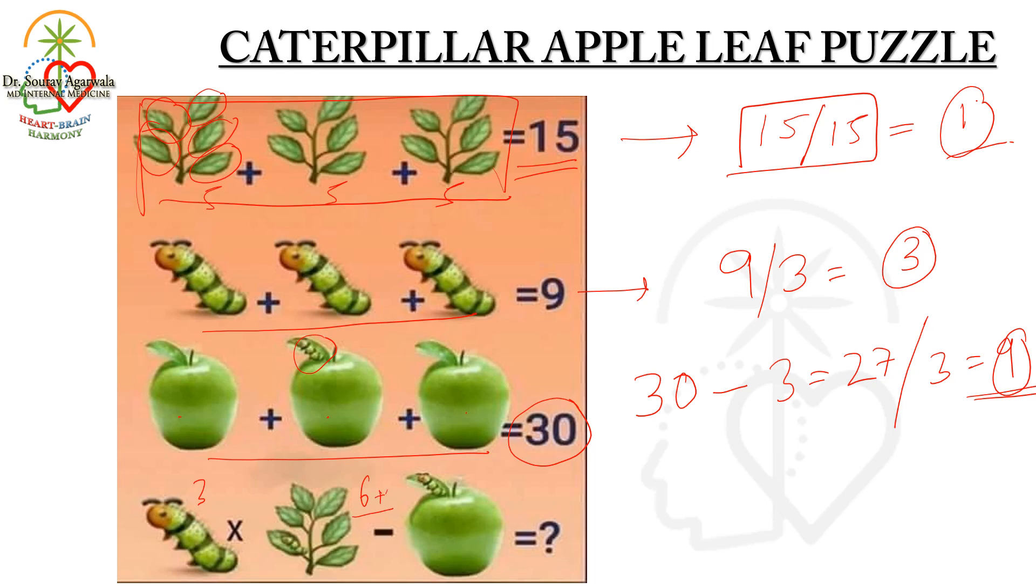And here we can see that there is an apple and the value of the apple is nine, and the value of the caterpillar is three. So here, three times nine minus nine plus three, that is 27 minus 12, that is 15.